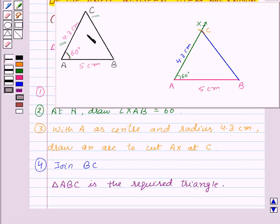Thus here we have constructed a triangle when the lengths of two sides, that is AC and AB, and the angle between them, that is angle A, are known.